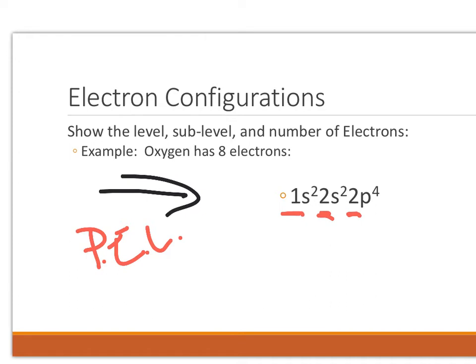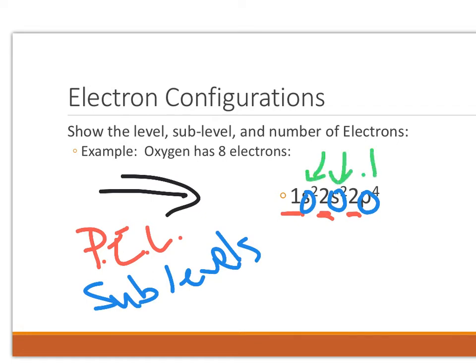Now I'm going to circle the sublevels here. We've got S, S, S, and P. Those are our sublevels. Remember, level 1 only has one sublevel in it, the S level. Level 2 has S and P. And finally in green, I'll point little arrows here that tells you the number of electrons in each of those sublevels.